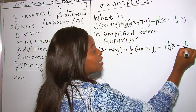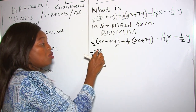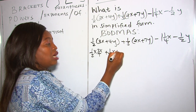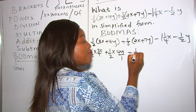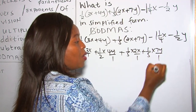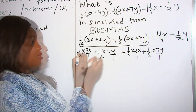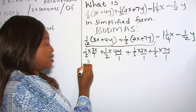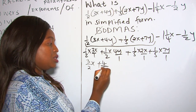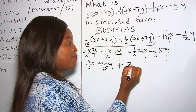We begin with the brackets. So we expand: one-half times 3x over 1, plus one-half times 4y over 1, plus one-fifth times 2x over 1, plus one-fifth times 7y over 1. We write each whole number over 1. Working out this part: 1 times 3 over 2 times 1 gives 3 over 2 x, plus 1 times 4 over 2 times 1 gives 4 over 2 y, plus 1 times 2 over 5 times 1 gives 2 over 5 x, plus 7 over 5 y.